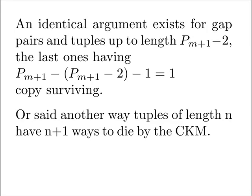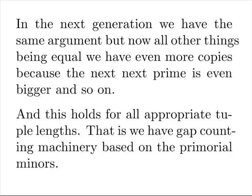Or, said another way, tuples of length n have n plus one ways to die by the composite killing machine. In the next generation, we have the same argument, but now all other things being equal, we have even more copies because the next next prime is even bigger, and so on. And this holds for all appropriate tuple lengths. That is, we have gap counting machinery based on the primordial minors.